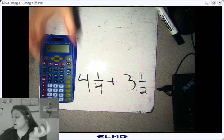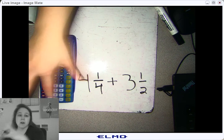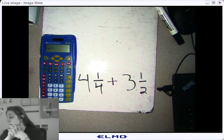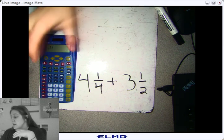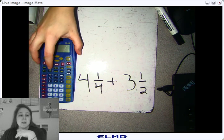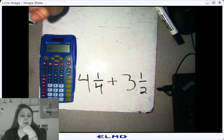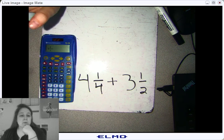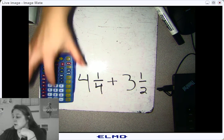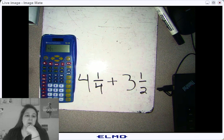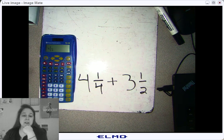Then you hit one, and it gives you the top part of the fraction. Now to get to the bottom of the fraction, you're going to hit the N button, and you're going to hit the four again. So now you've just entered four and one-fourth into the calculator.